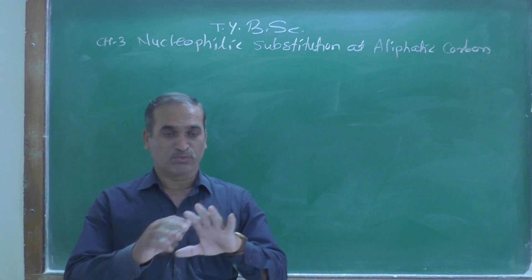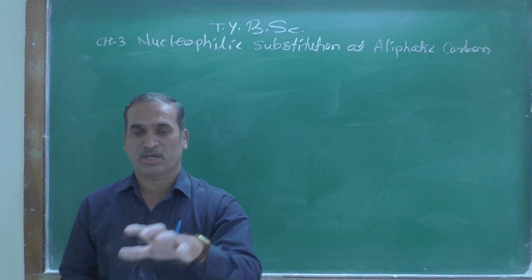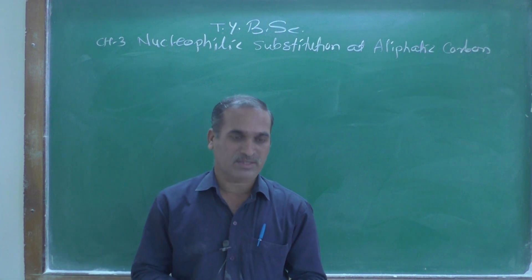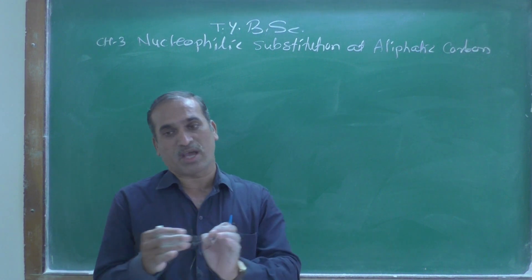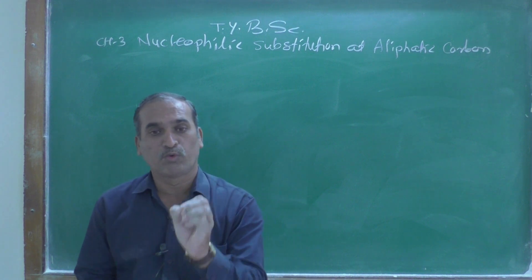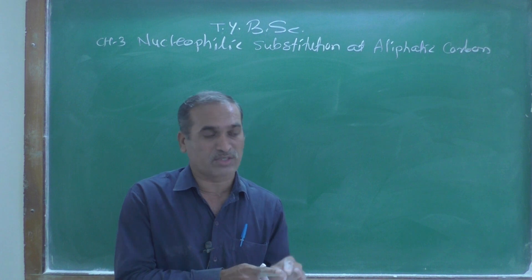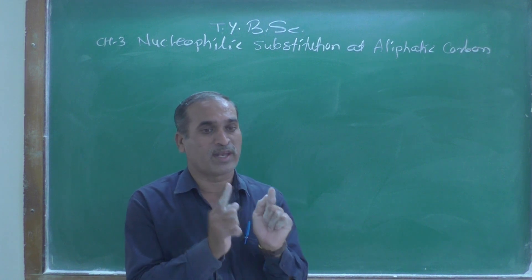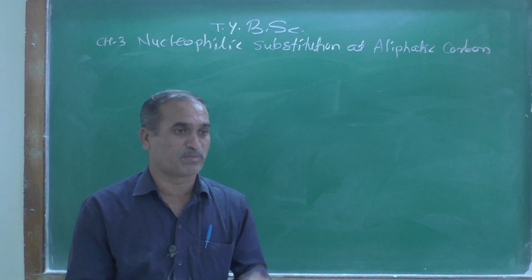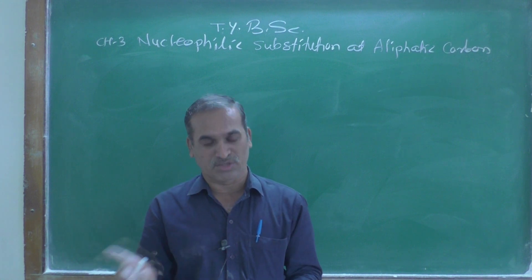We know that in the proposed mechanism, when the transition state is formed, it has SP2 hybridization and is trigonal planar. Therefore there are equal chances of the attacking nucleophile from the front side as well as the back side — 50-50 percent — meaning we get both retention and inversion, giving a racemic mixture in SN1. In SN2, the nucleophile approaches and attacks only from the back side with experimental proof. But in SN1, there is racemization — we get a racemic mixture of inversion product as well as retention product.